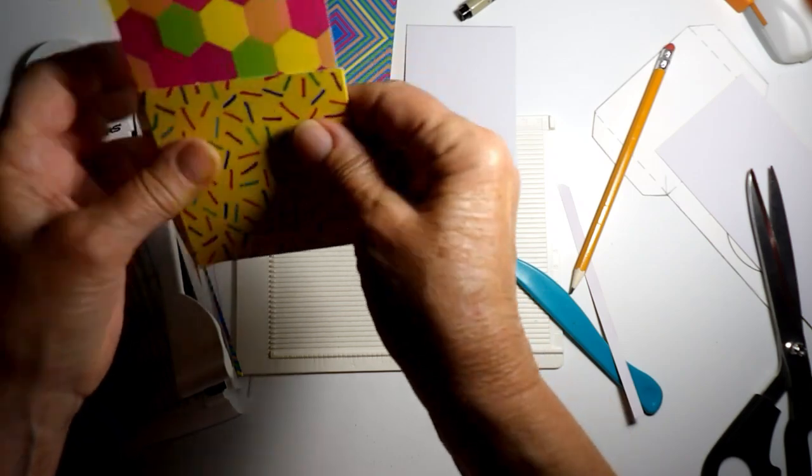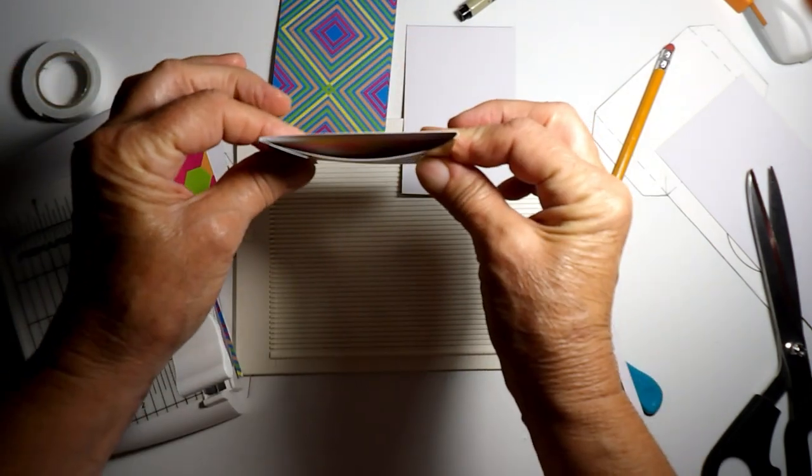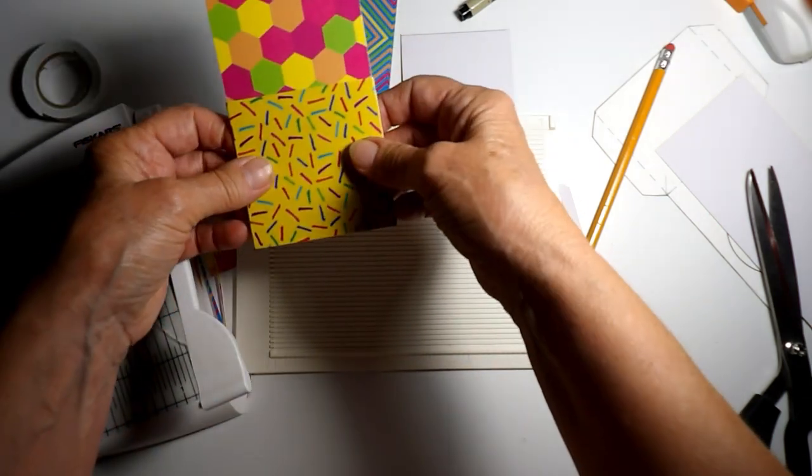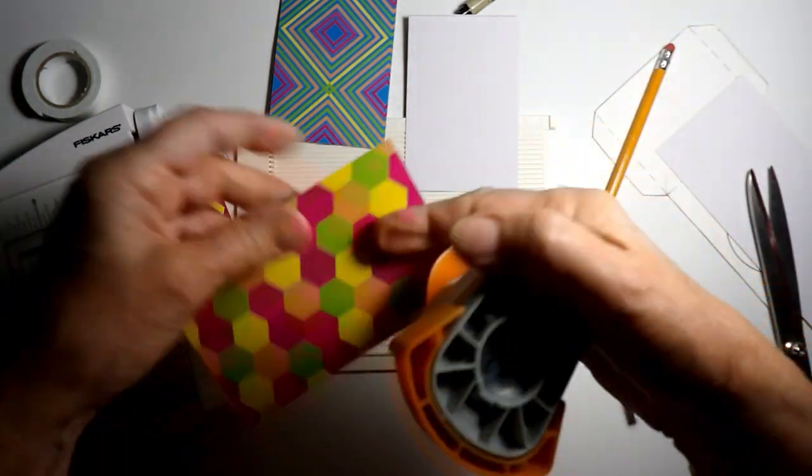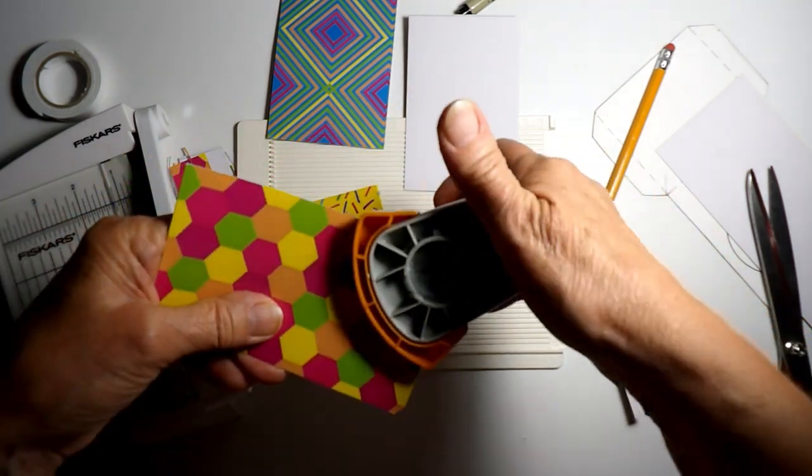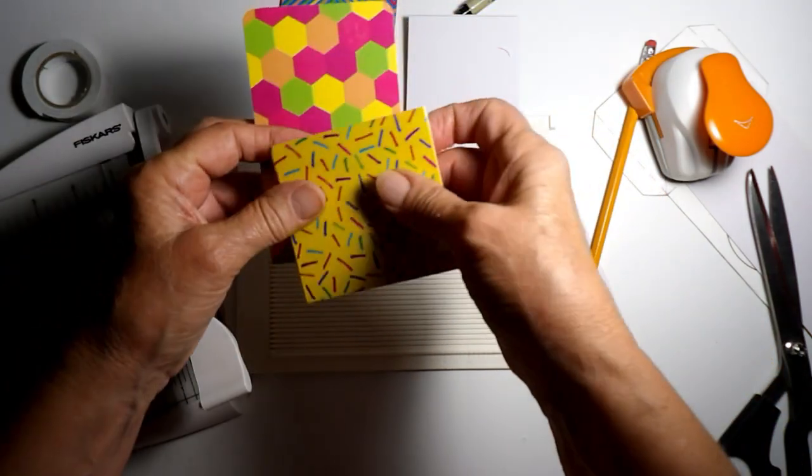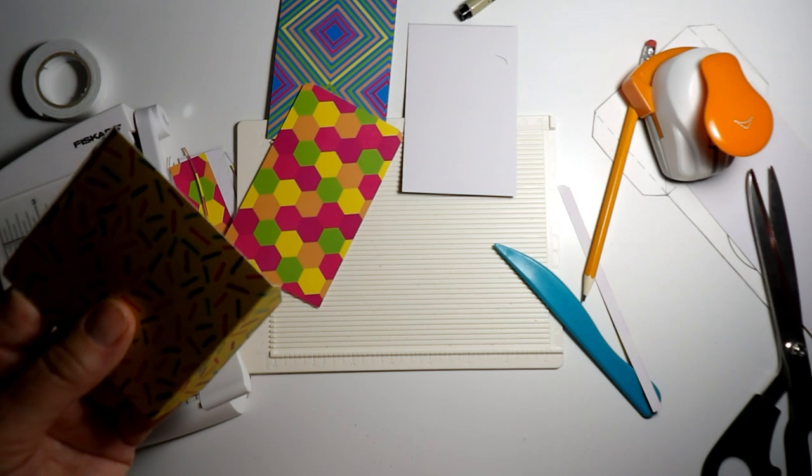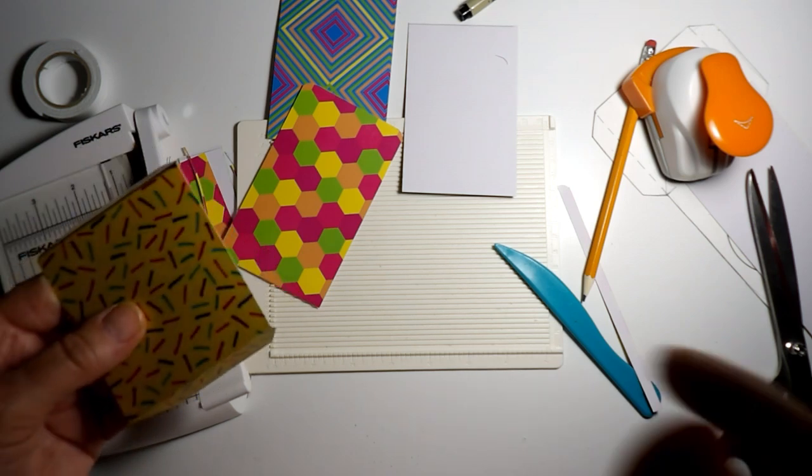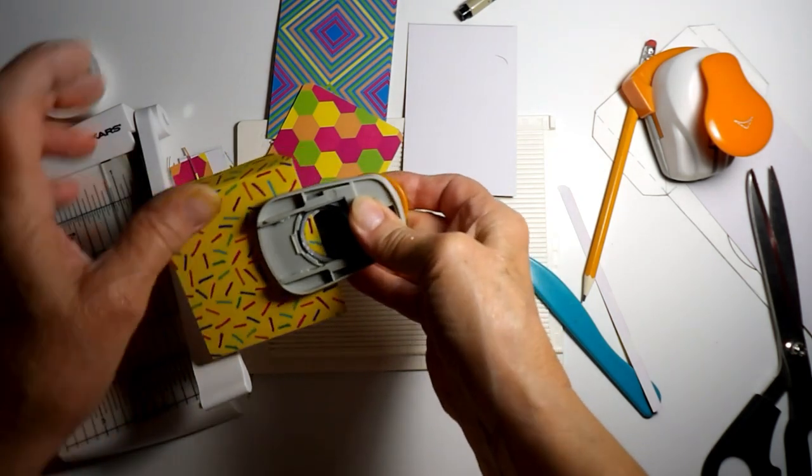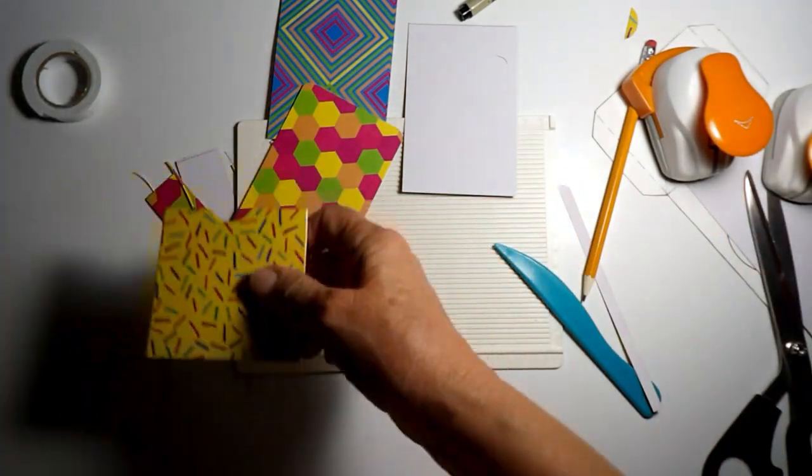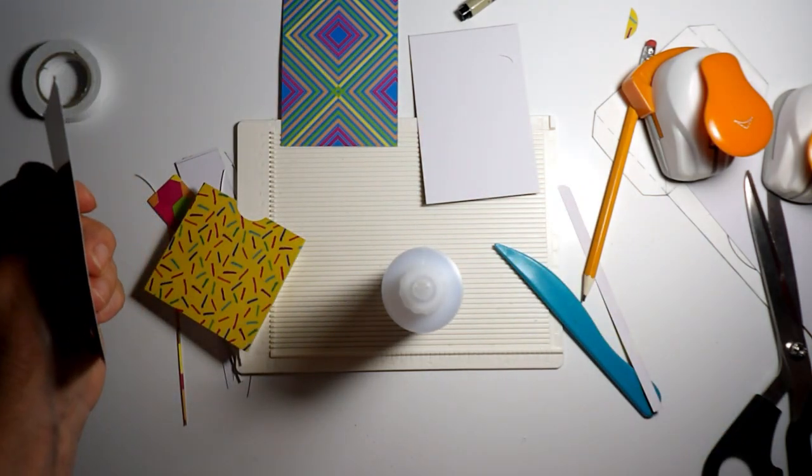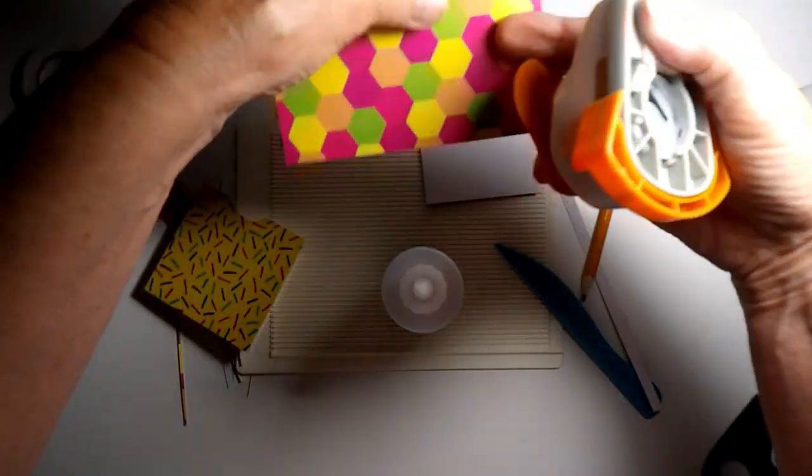So this is gonna go like this. I think we're gonna go with this. I kind of feel like that's too big, but I don't want to keep making it smaller and smaller. I'm gonna make a little notch.